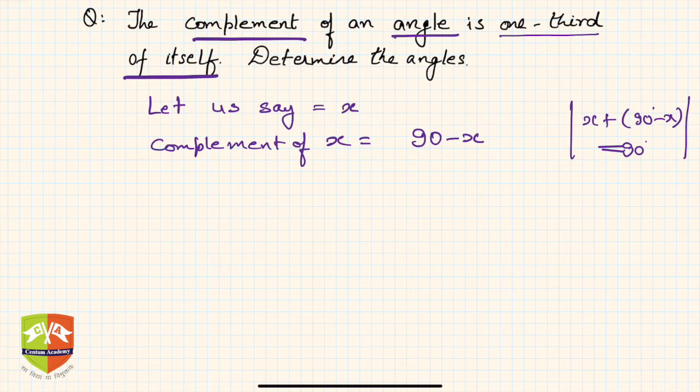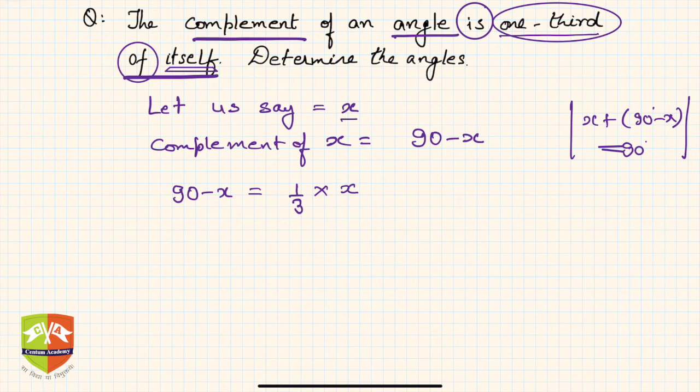So what does it say? It says complement is one third of itself. So what is complement? 90 minus x. So complement, and then there is a word 'is' which means equal to in mathematics. Then one third is nothing but one by three, 'of' means multiplication, and 'itself' is x. So this is the equation.